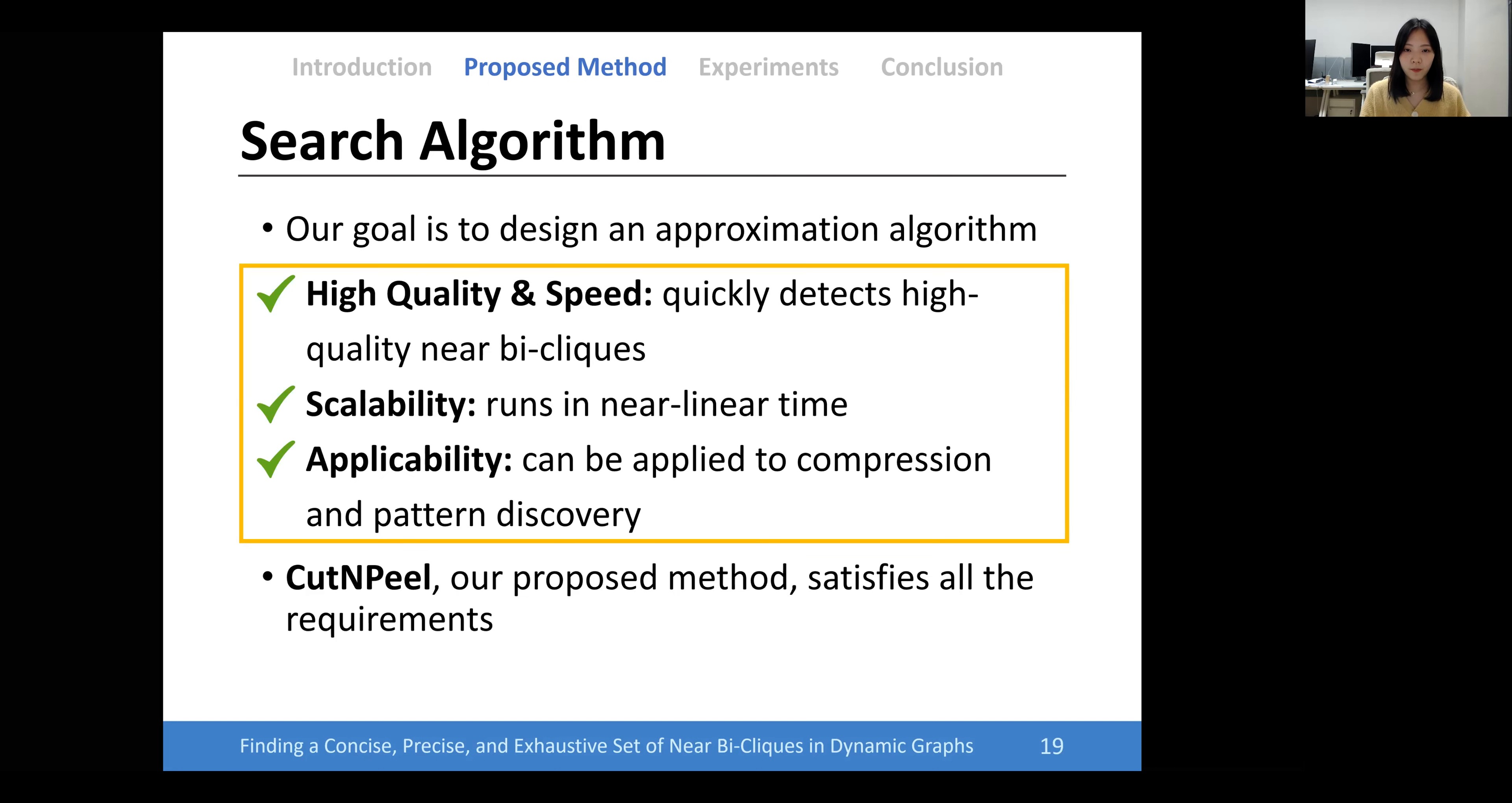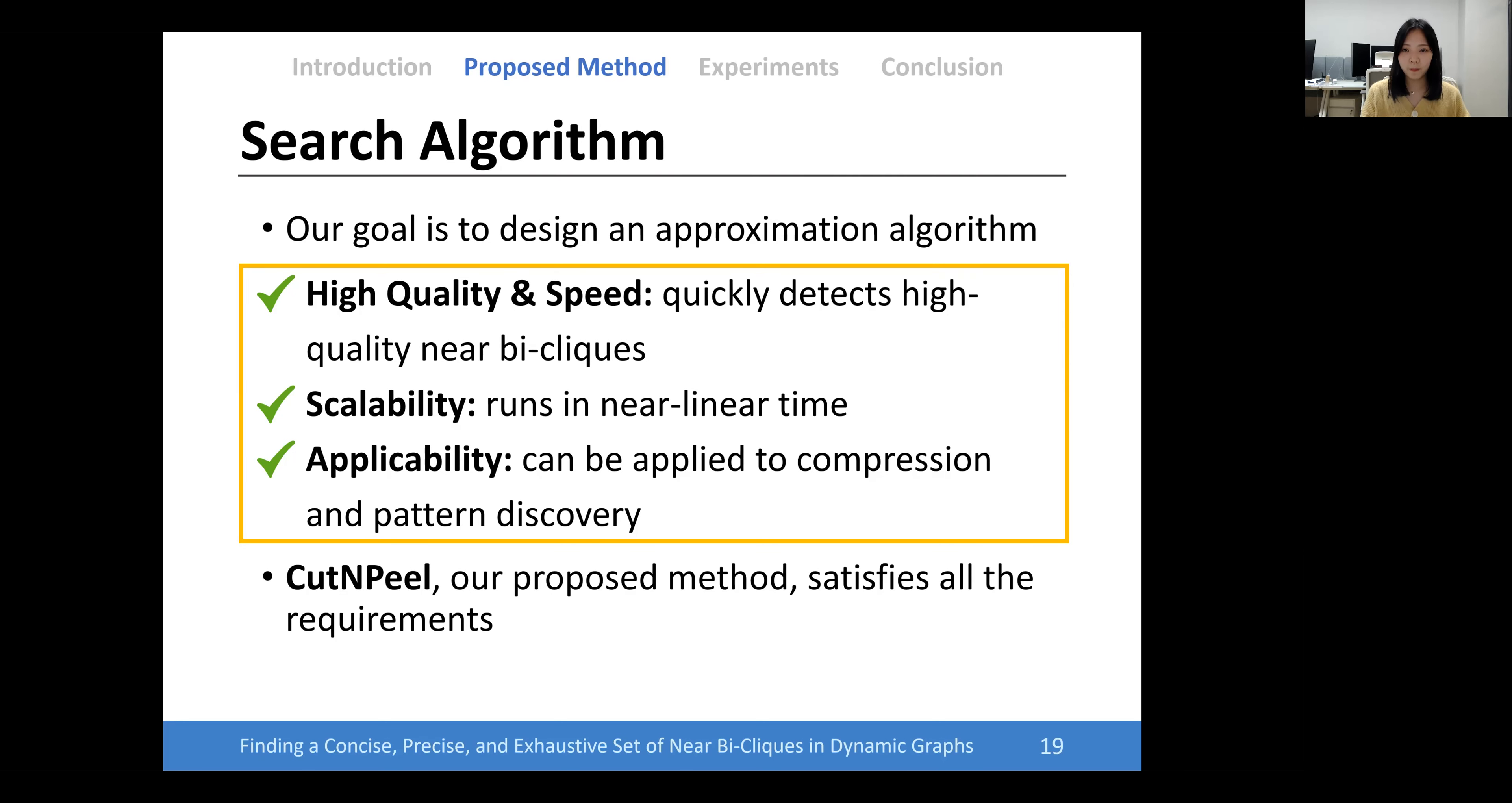To solve the problem, our goal is to design an approximation algorithm that detects high-quality near bi-cliques quickly, runs in near linear time, and can be applied to applications such as compression and pattern discovery. Cut and Peel, our proposed algorithm, satisfies all the requirements.